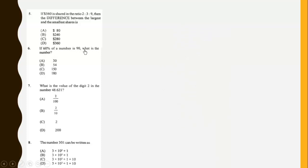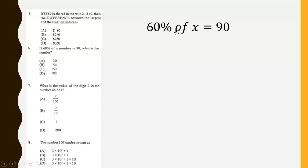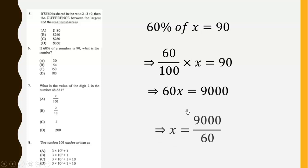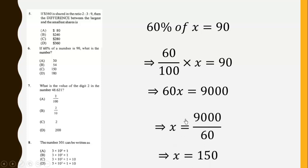If 60% of a number is 90, what is the number? Let the number be x. So 60% of x equals 90, which we write as 60 over 100 times x equals 90. We multiply through by 100, then divide through by 60, to get x equal to 150.